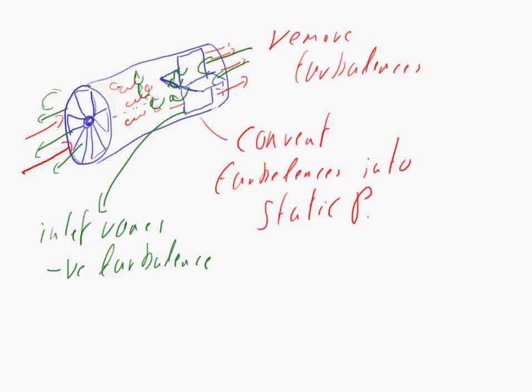Most guide vanes are outlet vanes. Inlet vanes are very rare. If you have the motor here, that's going to do a lot of turbulence. So you have the guide vanes at the inlet. Or if you have a damper mounted at the inlet creating turbulence, you want to clean up the air before it hits the impeller. Another better option is to have the guide vanes mounted alongside the motor. But in most cases, the guide vanes are on the exhaust side.